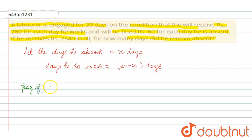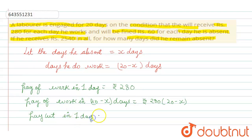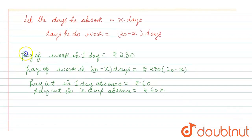Pay for work in one day is rupees 280. Then pay for work in 20 minus x days is equal to 280 into (20 minus x) rupees. Pay cut in one day of absence is rupees 60, and pay cut in x days of absence is equal to rupees 60x.